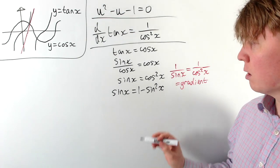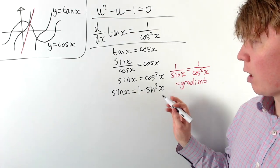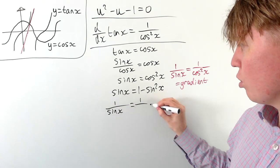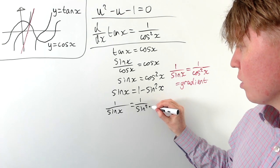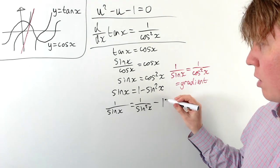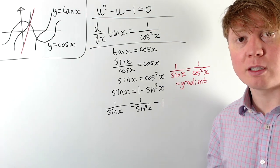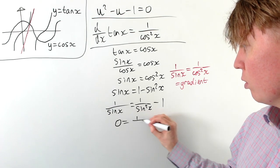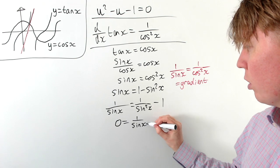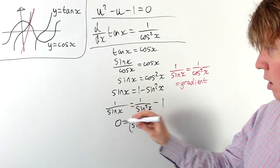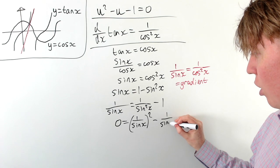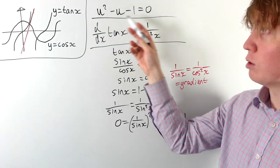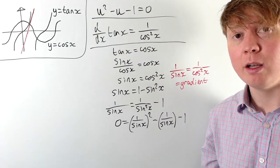If we divide everything by sin squared x, we get on the left-hand side 1 over sin x, equal to 1 over sin squared x minus 1. Rearranging, we get 0 equals 1 over sin x all squared, minus the 1 over sin x term, minus 1. This indeed satisfies our quadratic u squared minus u minus 1 equals 0.